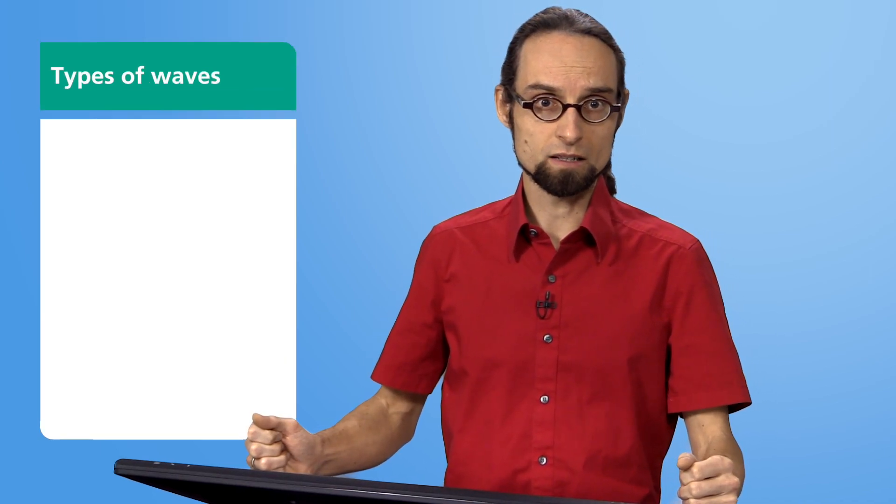Seismic waves from an earthquake spread out in all directions, cause the earth to oscillate and can be measured using seismometers. If they are strong enough, we can also feel the waves. But what exactly is oscillating here? To answer this question, let's first look at other types of waves.